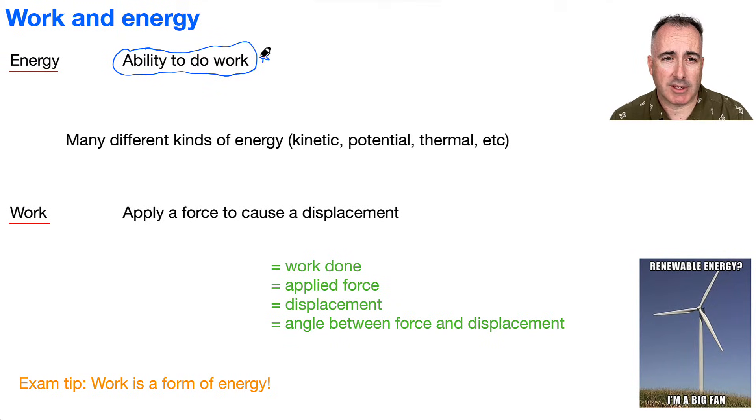Energy is defined as, at least one of the definitions, the ability to do work. E equals energy, measured in joules. There's lots of different kinds of energy - kinetic, which means moving, potential means stored, thermal energy. It's important to know we're going to be using this idea to do work.